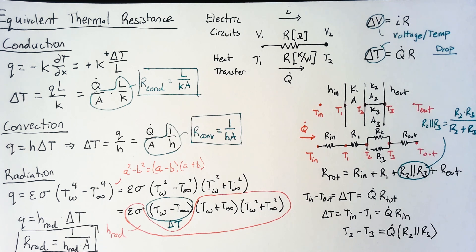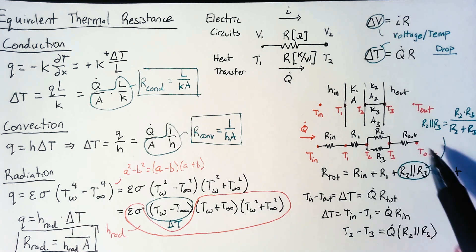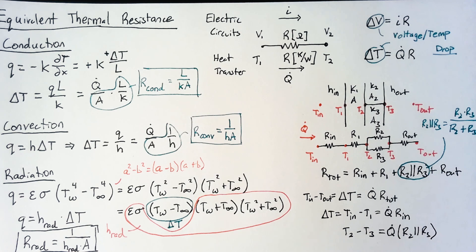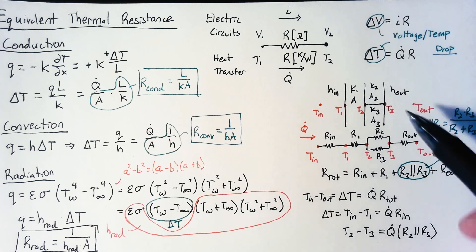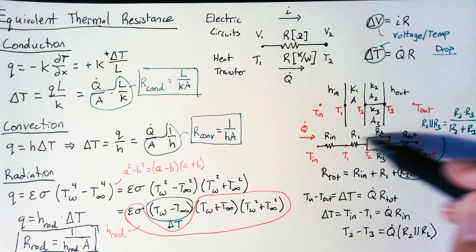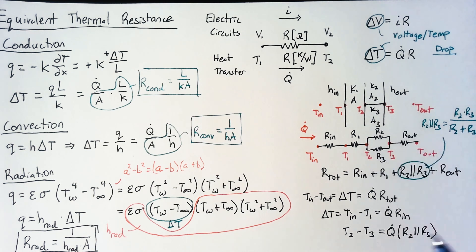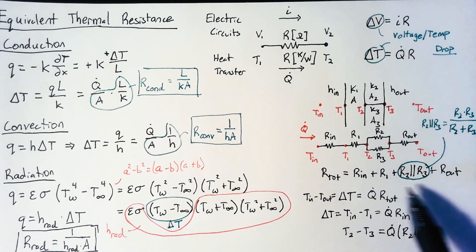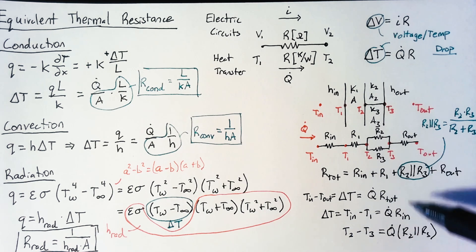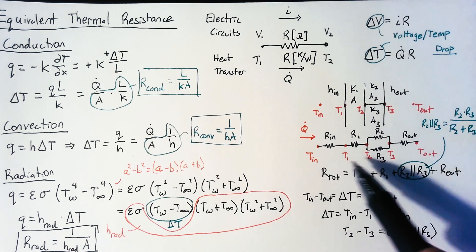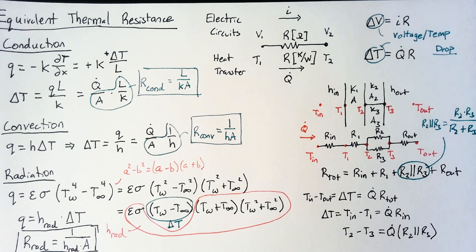So this should be enough to get you started on any of these more complex problems where just the simple formulas just make things really complicated. We switch things into equivalent resistance networks and then just use the total equivalent resistance in order to figure out what that first heat flux is. And then once we have the heat flux, we can figure out what all those intermediate temperature values are. So good luck with your problems and I'll catch you next time.